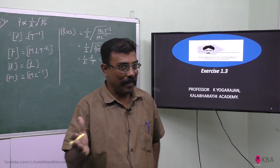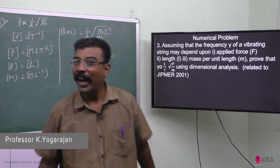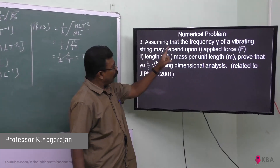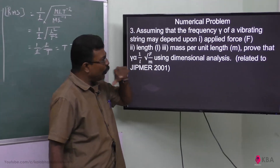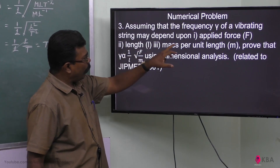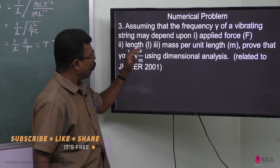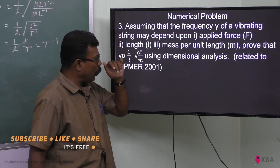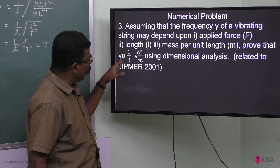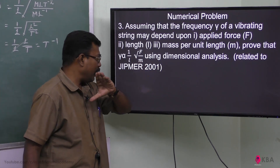I am going to show you a simple problem. The problem is: assuming that the frequency ν of a vibrating string may depend upon the force, length, and mass per unit length, prove that ν is proportional to (1/L) × √(F/M) using dimensional analysis.